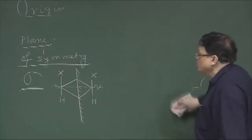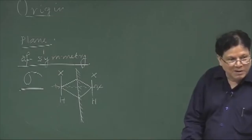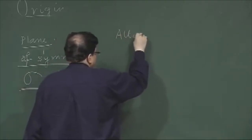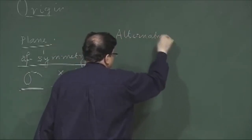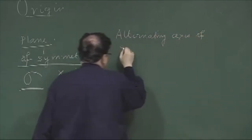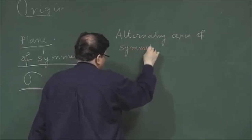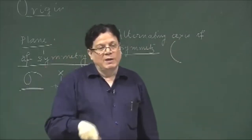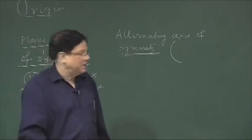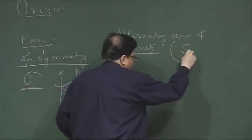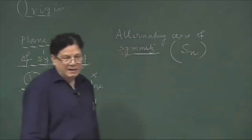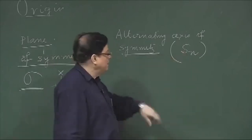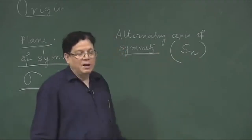The fourth symmetry element is called the alternating axis of symmetry. Since it is an axis of symmetry, a fold is associated with it because rotation is needed. This is designated as Sn, where n is the fold and S denotes the alternating axis. So Sn means an n-fold alternating axis of symmetry.